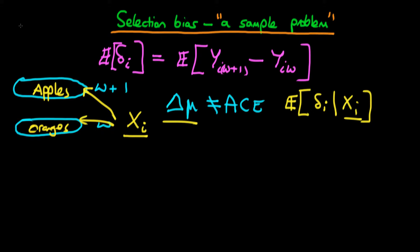Essentially, all of these methods hinge on the fact that selection bias is essentially a problem with samples. What I mean is that we're comparing the group with W+1 against those with W, and we're comparing apples with oranges because there are different levels of covariates which are also important in determining the output variable. These problems with the sample reflect differences in the covariates Xi.